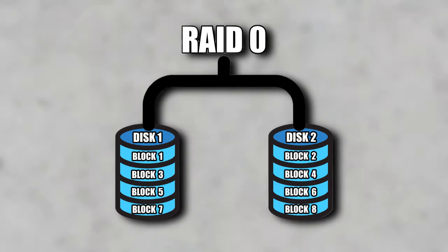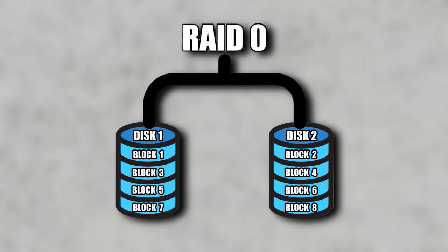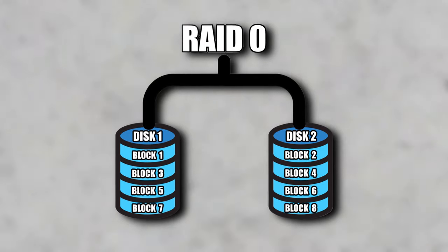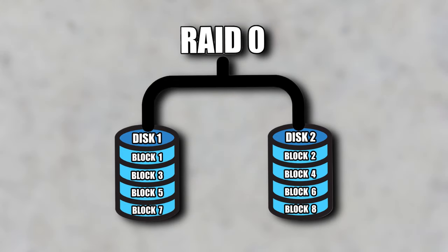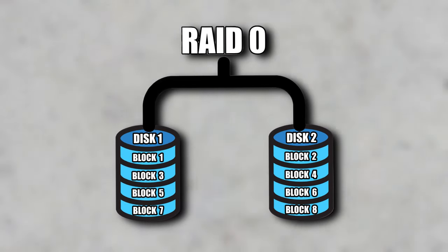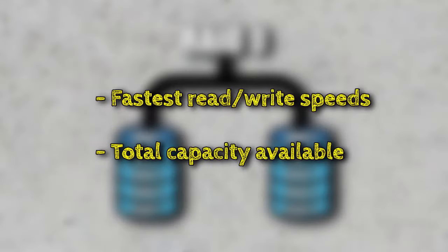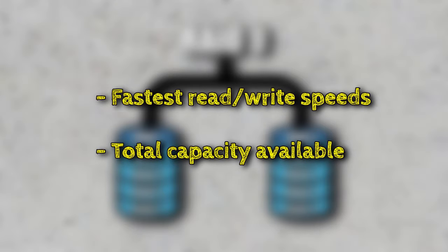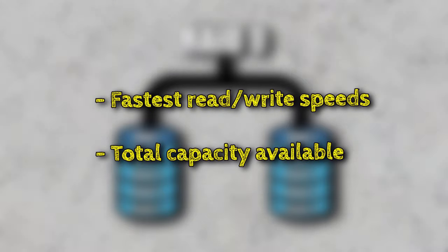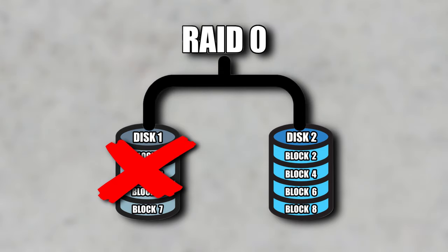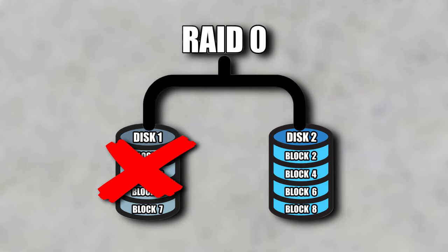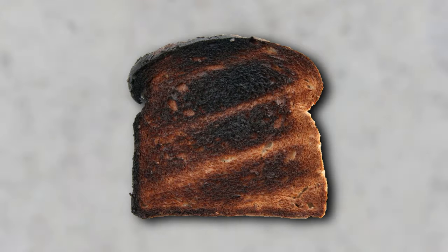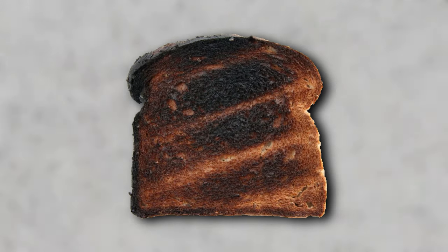When set in RAID 0, data is striped in blocks across multiple drives. While the pros might be the fastest read/write speeds across the board, as well as higher total available capacity, if one disk fails — barring any recovery — your data is toast. Burnt, inedible toast.